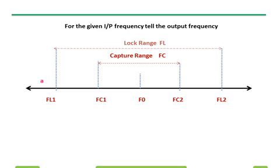Now let us consider one example. Imagine the input frequency is FA — the output frequency will be F0. Now consider I change to FB — output will be F0 only, because it has not yet captured. Now input becomes FC — output will become FC because it is within FC1 and FC2. Now FD — output becomes equal to FD. FE — output follows the input because it is already captured. FF — output will become F0 because it is beyond the lock range.